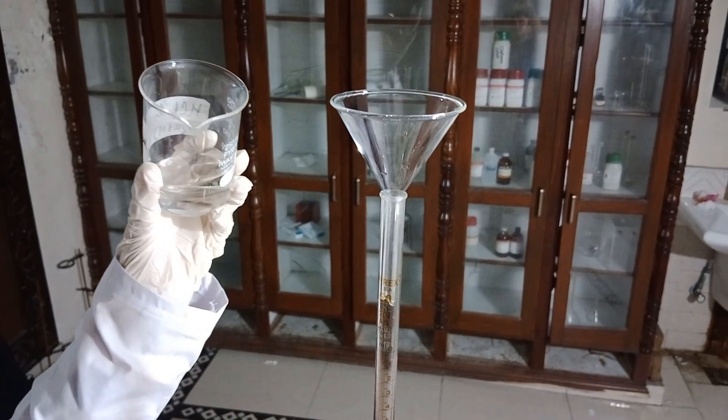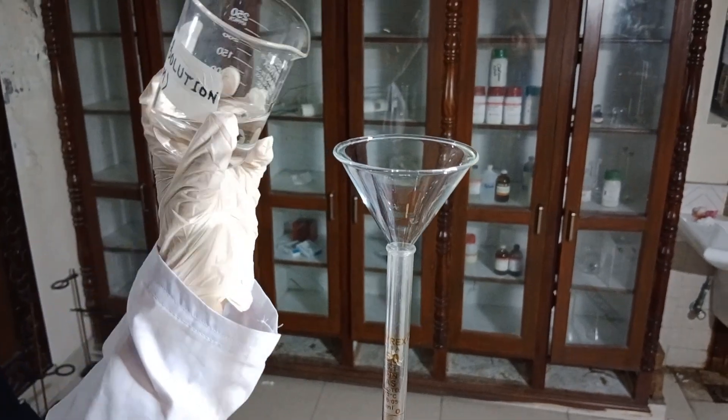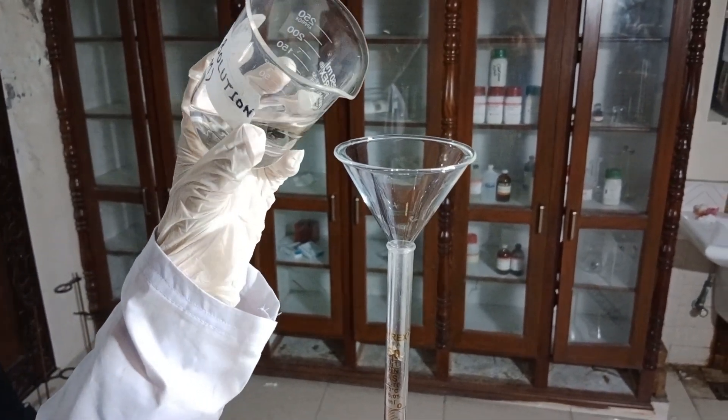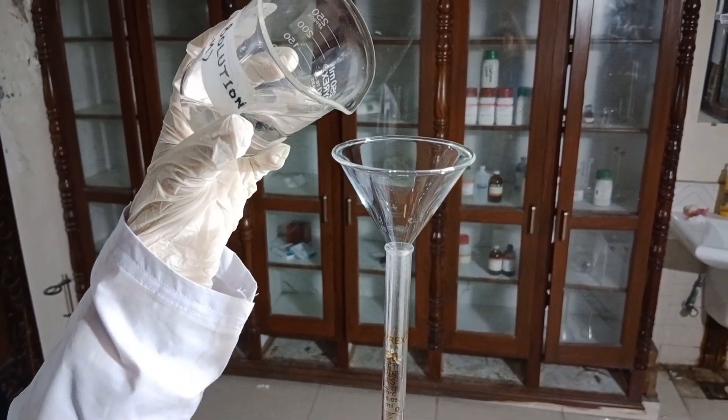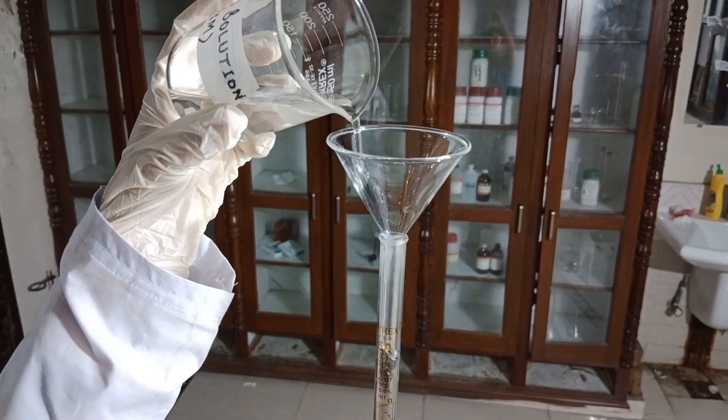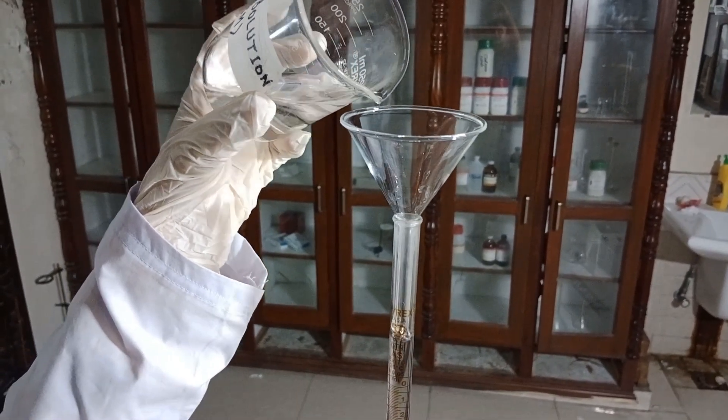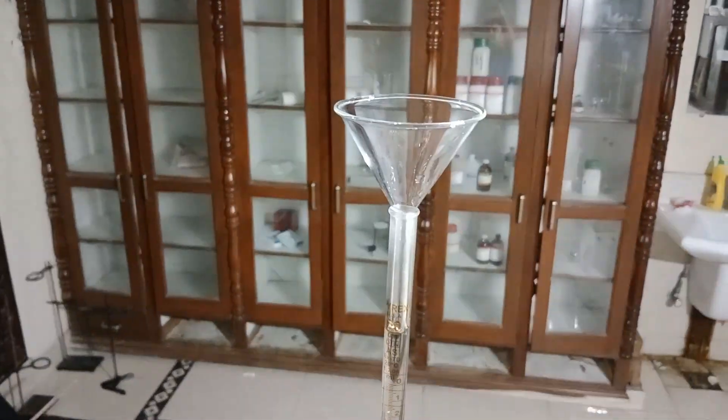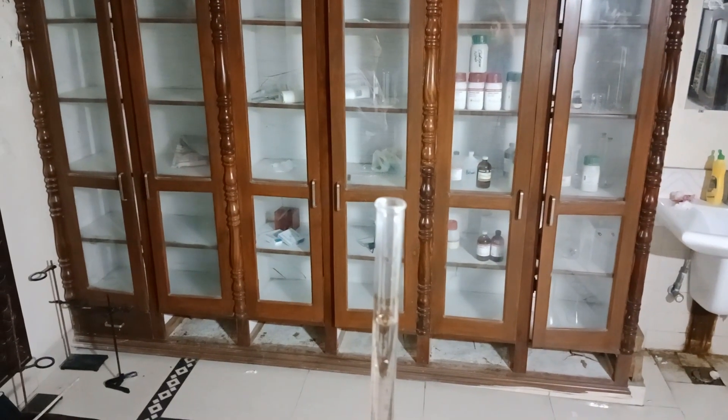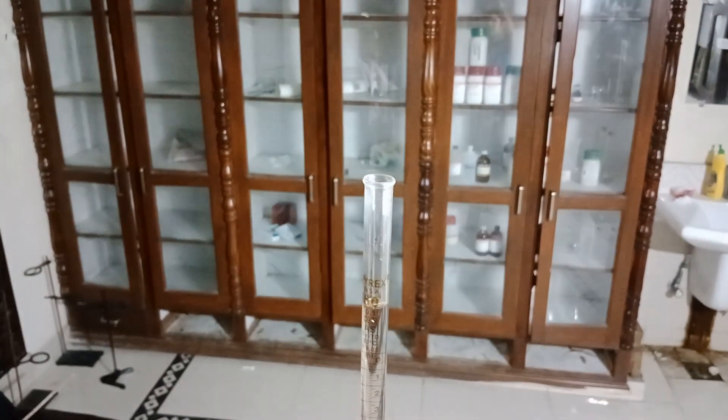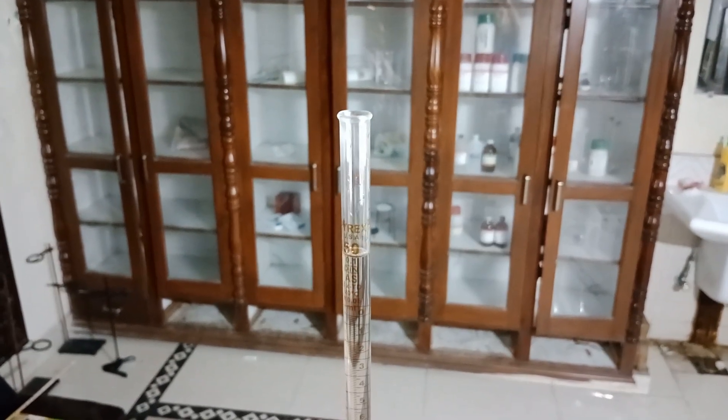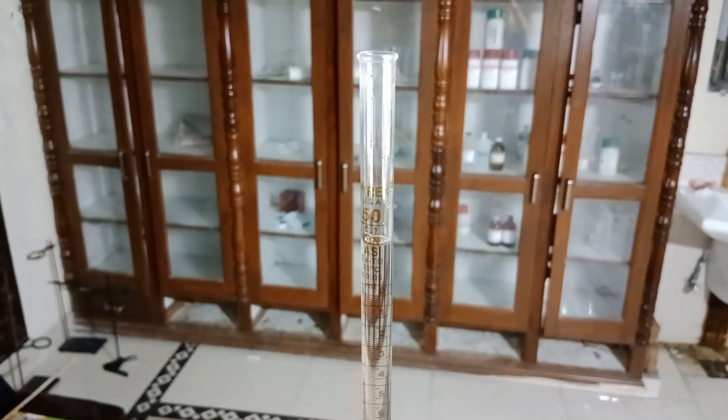First, fix the burette in the stand and rinse it with water and hydrochloric acid solution. Fill the burette with hydrochloric acid solution using a funnel, then remove the funnel. Because hydrochloric acid solution is colorless, adjust the level to zero.